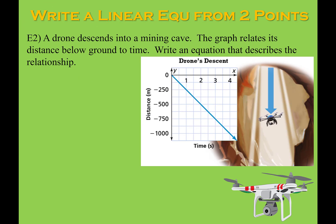Here we have a drone that's descending into a mining cave. An important piece of information is that it's descending. If I look at my graph, you can see that the line is traveling downward from left to right, further reinforcing the negatives — I'm in quadrant 4, with positive x values and negative y values. The problem asks us to write an equation that describes the relationship in this graph. So x is going to be the amount of time that passes, and y is going to be how deep the drone is below the surface. In order to do that, I need the constant of proportionality or the slope, since they are equivalent here.